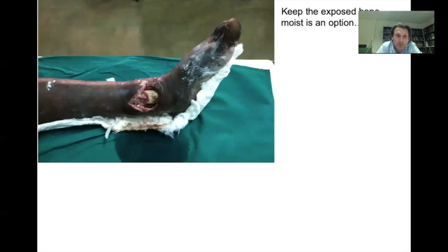In very advanced situations you can do a free flap — for example, taking muscle from the upper leg and bringing it down to the lower leg and reattaching it to blood vessels — but that requires microsurgery and a microscope, which are often not available in low-resource settings. If you really have nothing else to do, one option is to keep the bone as moist as possible with wet gauzes changed frequently enough to support surrounding tissue to gradually grow over the bone. It is very difficult but not impossible.